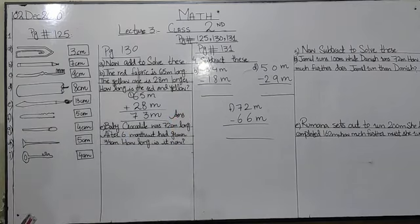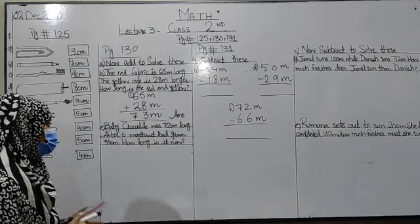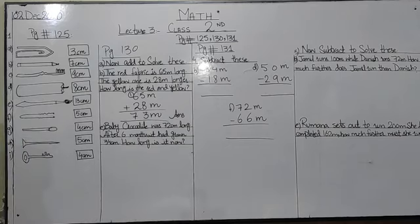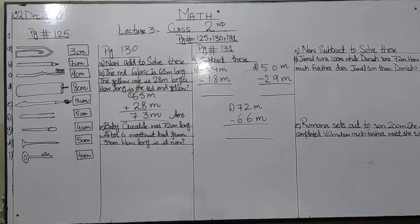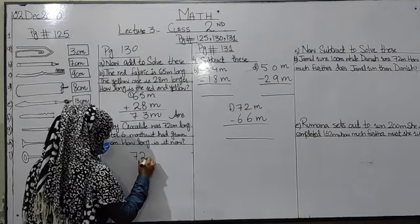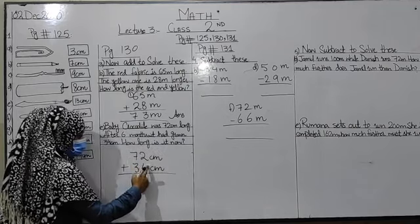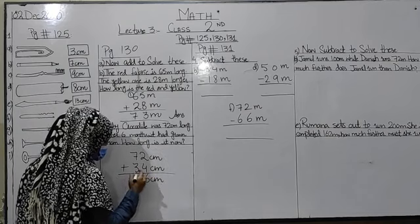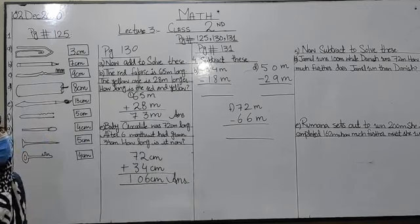Baby crocodile was 72 centimeters long. After six months, it had grown 34 centimeters. How long is it now? Pehle wo 72 cm ka tha, phir 34 cm aur grow ho gaya, to plus kar do: 2 plus 4 equals 6, 7 plus 3 equals 10. Ab crocodile ka baby 106 centimeters long hai.